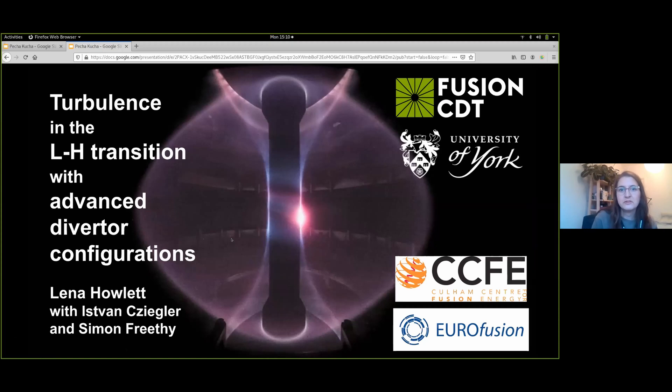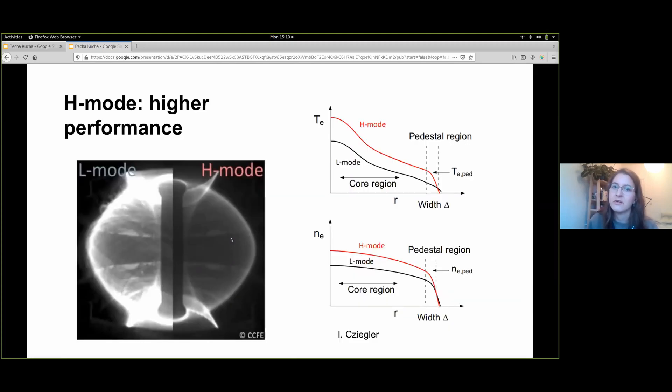One goal of fusion research is to build a power plant with much higher energy output than needed to start and run the reactor. Tokamaks have different confinement regimes with different characteristic profiles of plasma parameters. For reactor operation, the high confinement H-mode is preferred.